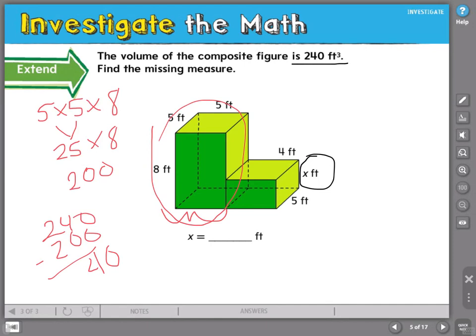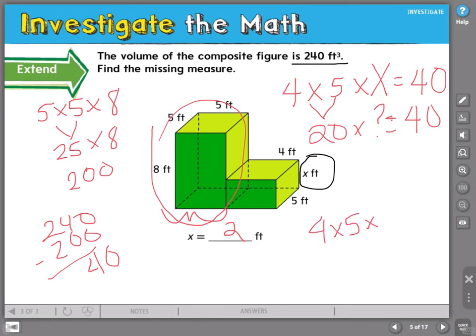So I know I've got 4 times 5 times x equals 40. Here, 4 times 5 is 20. 20 times something will give me 40. Well, that's pretty easy. I know 20 times 2 is 40. So that means x must equal 2, because 4 times 5 times 2 would be 40.